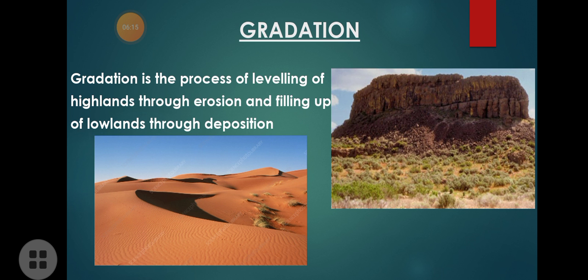Gradation is the process of leveling — making land flat by leveling the high land through erosion or filling up the low land through deposition. Deposition means moving sediment from one place to another. Erosion means breaking it up into small pieces or destroying it in a slow process. This is called gradation. Wherever you see an elevated body, the external forces — whether wind or water — erode it and bring it down to ground level.